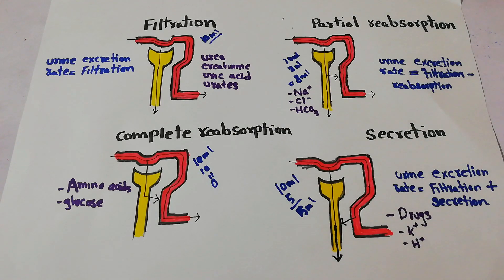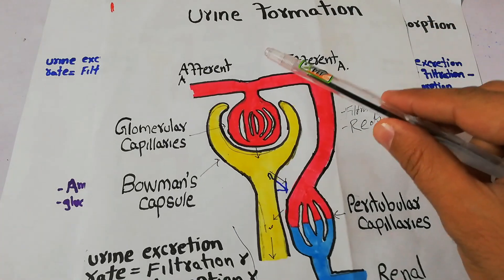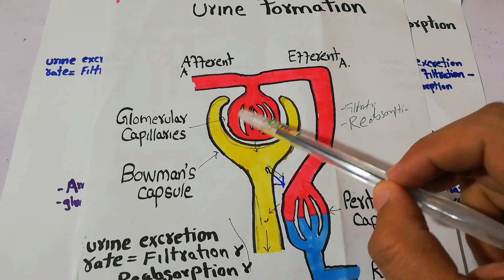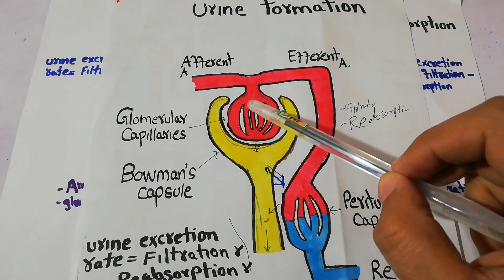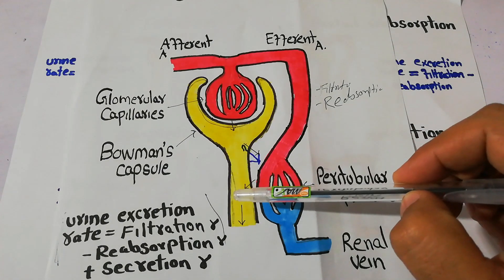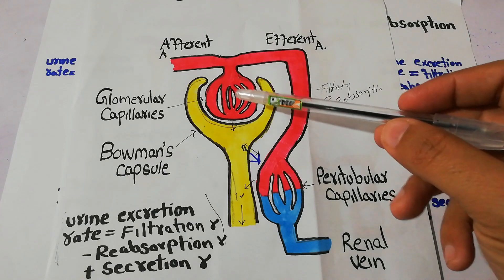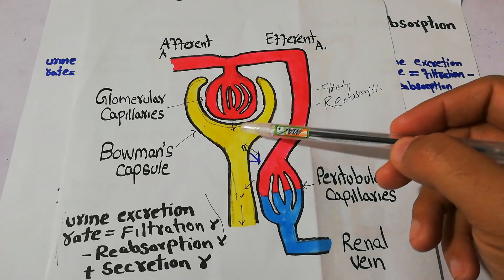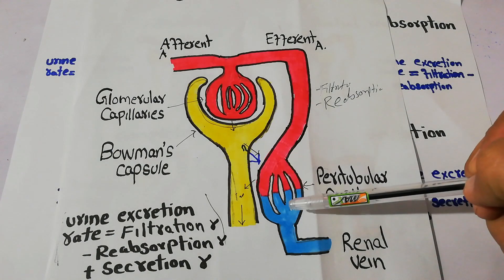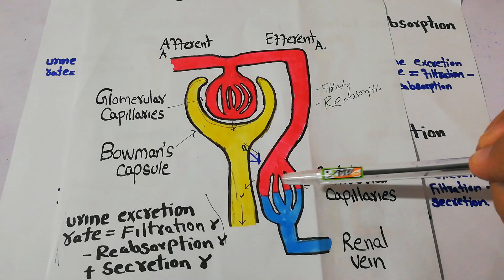In our last two lectures we discussed that urine formation basically begins when blood is filtered at the glomerulus. Afferent arterioles bring the blood into the Bowman's capsule, where it divides into the glomerulus — a bunch of capillaries — and the blood is filtered. The filtrate enters the Bowman's capsule and moves through the tubules of the nephron. There are thousands of nephrons in each kidney performing the same function. Once the filtrate moves in the tubule, some substances are reabsorbed into the peritubular capillaries, some are secreted from the peritubular capillaries into the tubule, and some substances are neither reabsorbed nor secreted.